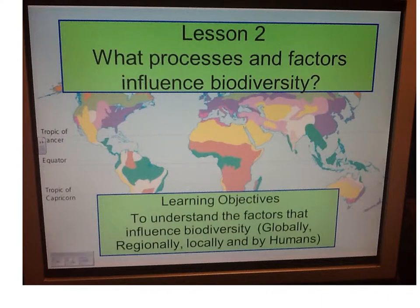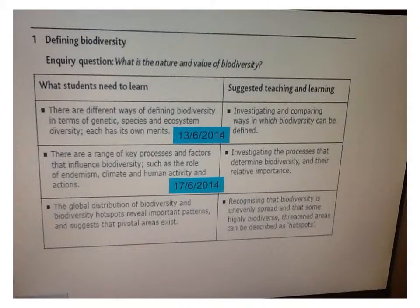Today's lesson we looked at what processes and factors influence biodiversity. We're going to focus on factors which influence biodiversity globally, regionally, locally, and also anthropogenic — by humans. This links into your spec in your first key question: what is the nature and value of biodiversity? It looks at the second bullet point: there are a range of key processes and factors that influence biodiversity, such as the role of endemism, climate, and human activity and actions.